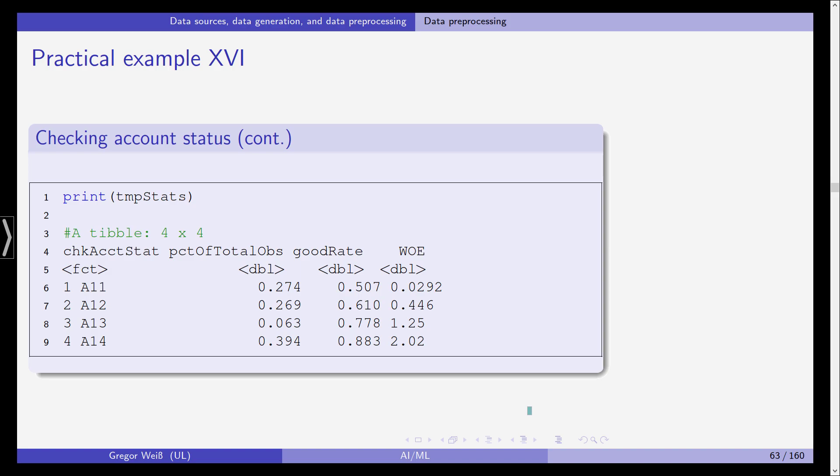So let's see what comes out of this. If we print those results, you can see for these four levels, A11, A212 and so on, we have a percentage of total observations of 27, 27, 6 and 39 percent. The good rating is 50 percent, 61 and so on, and the weight of evidence is more tilted towards the extremes, actually to zero and two.